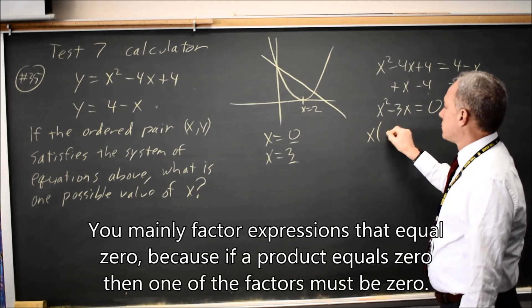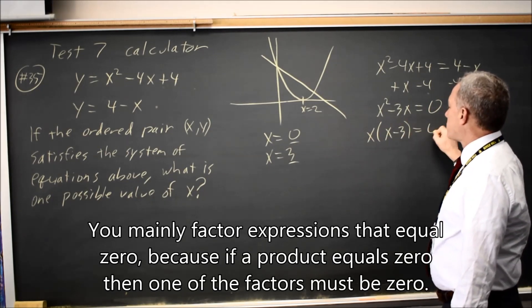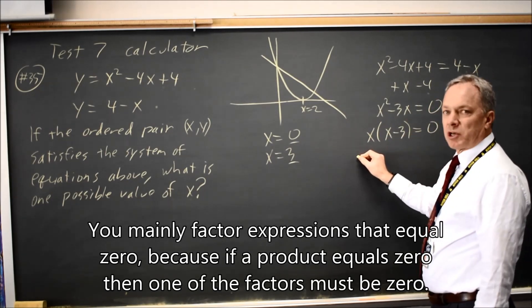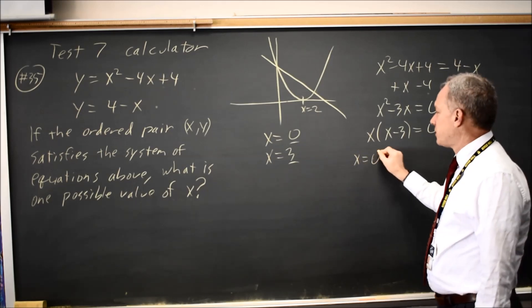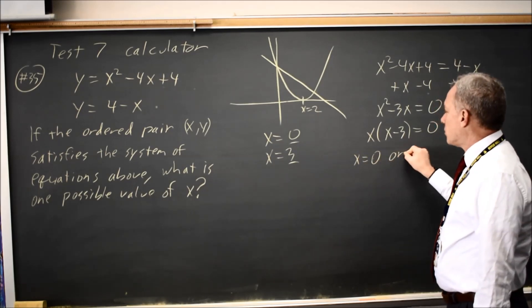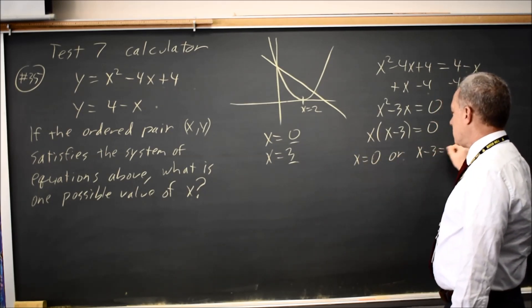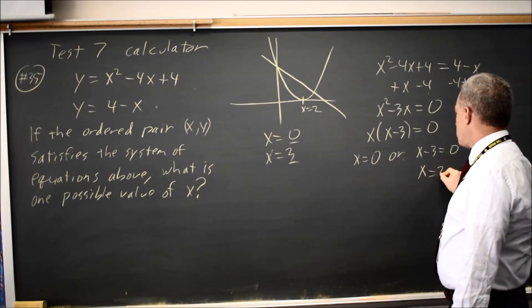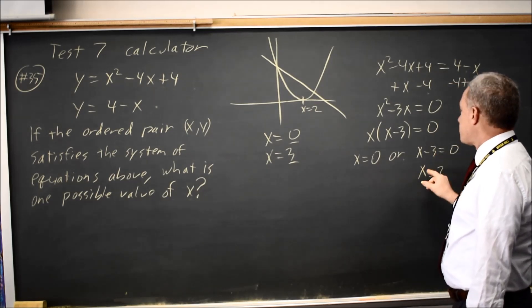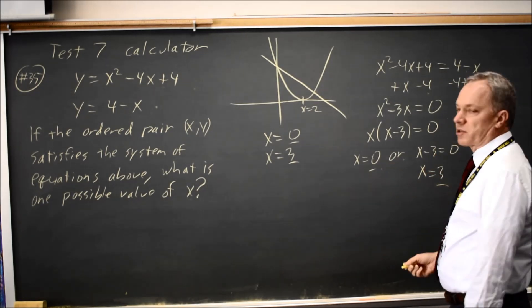Factor. We have a product that equals 0. If a product equals 0, either the first factor is 0 or the second factor is 0. Add 3 to both sides and we get x equals 0 or x equals 3.